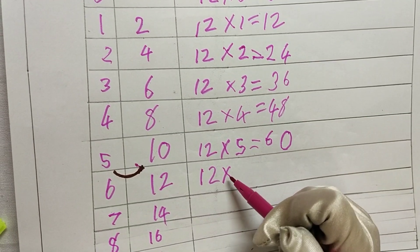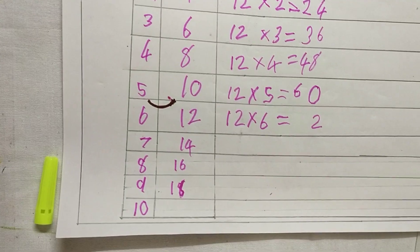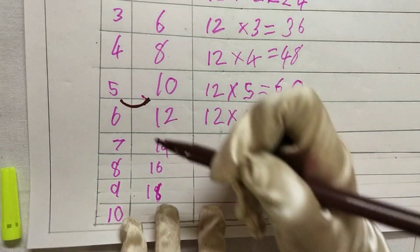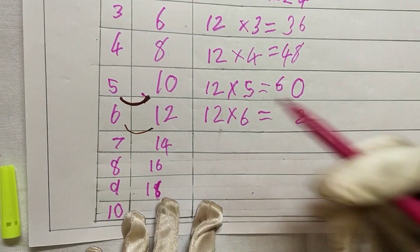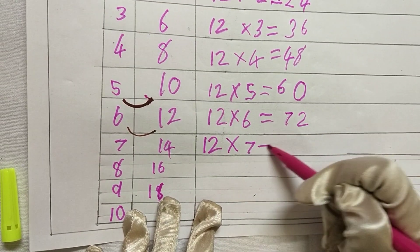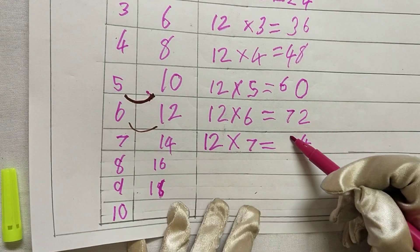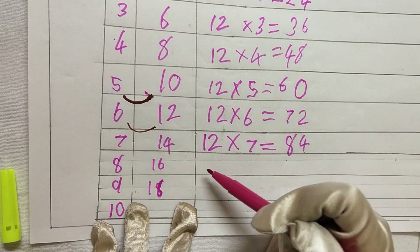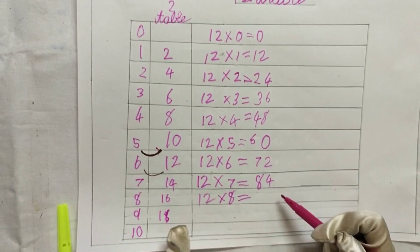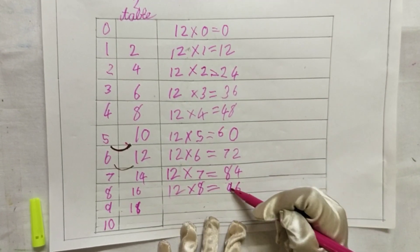Next, 12 into 6: the 12 gives us 2, which I write here, and then I join the 1 with the 6 to make it 7 — so 72. 12 into 7: we write 4, and join the 7 with the 1 to make it 8 — so 84. 12 into 8: we put the 6, and we join 8 with the 1 to make 9 — so 96.